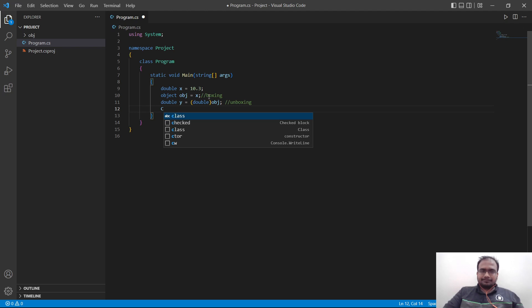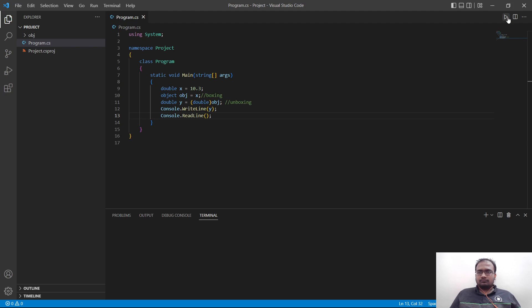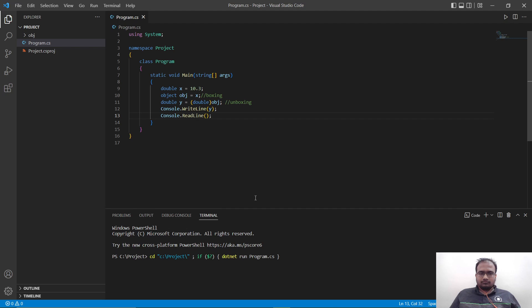Let's try to print this. Console dot write line, and we will print y. Then also have console dot read line. Let's save this and run it. Here, as you can see, it has printed 10.3.